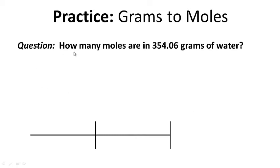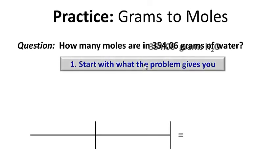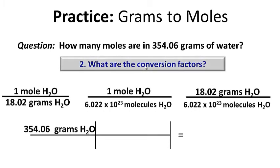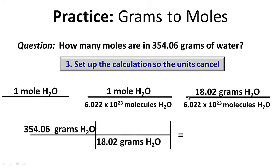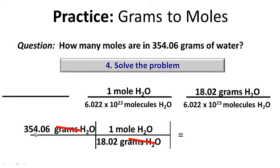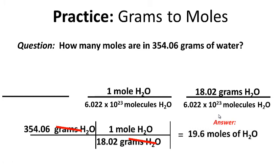A little more practice: how many moles are in 354.06 grams of water? Pause and work on this, then hit play to check your work. Step one: start with what the problem gives us. Step two: identify your conversion factors — the question involves moles and grams, so we want a conversion factor involving moles and grams. We put grams on the bottom and 1 mole on top. Units cancel, and we solve: 354.06 times 1 divided by 18.02 gives us 19.6 moles of H2O.